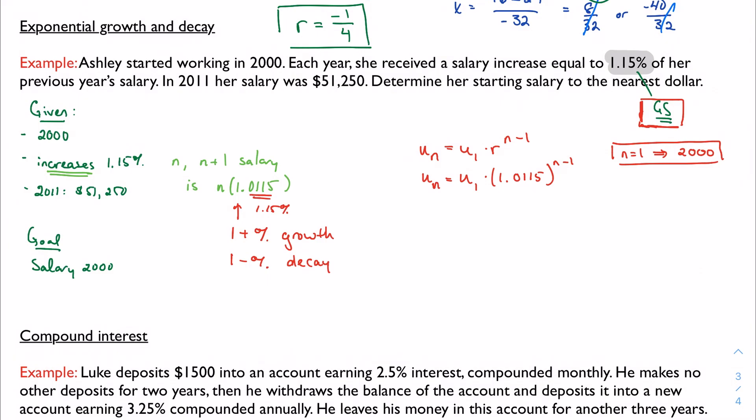We have something that looks like a general term, but we have more information. We have what we'd call an initial condition in other branches of math. We know that in 2011 her salary was $51,250. So if the year 2000 is represented by N equal to 1, the year 2011 is going to be represented by N equals 12. So I know that U sub 12 is equal to 51,250. Well, I can also represent that by U1 times the common ratio. N is 12, so 12 minus 1 is 11. I can kind of combine these now. I can combine these two statements to say that $51,250 was made by taking the base salary and multiplying by the common ratio 11 times. So let's figure out what that is.